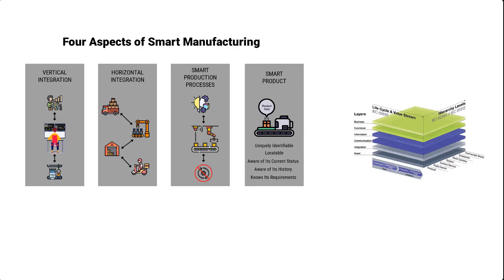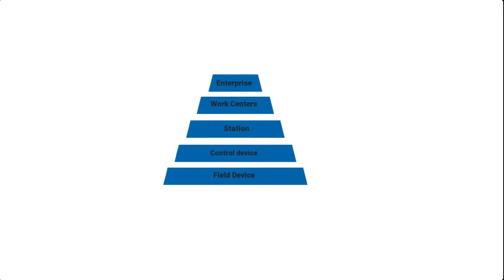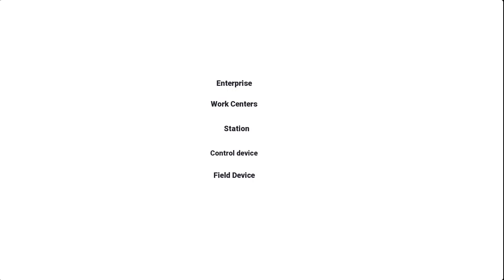In simple terms, the RAMI 4.0 model is three-dimensional and layered because, in addition to the hierarchy levels that point to where a certain component lives in the organizational hierarchy of a manufacturing facility, the components themselves have layers that need to be defined. For example, whilst a pump might live in the field devices level of the manufacturing facility hierarchy, we need to also define layers within it, which could be its physical properties, communication abilities, and its abilities to be integrated with other components. This calls for the creation of a separate axis to capture these layers for each component.